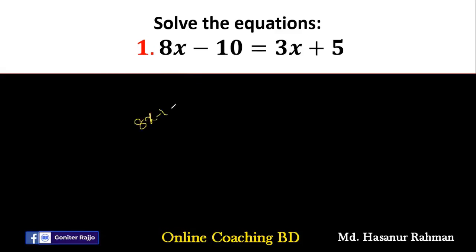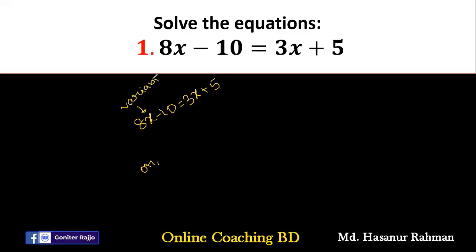So 8x minus 10 equal to 3x plus 5. We have to write the similar terms on one side and the similar terms on the other side. x is called the variable, so we'll write the two variable terms on the same side, and 10 and 5 are both constants, so we'll write them on the other side.